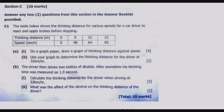Let us look at question C1. The table below shows the thinking distance for various speeds for a car driver to react and apply brakes before stopping. We have thinking distance in meters, then speed in kilometers per hour. Thinking distance ranges from 0 all the way to 15, and speed ranges from 0 to 80. Question (a), part (i): on a graph paper, draw a graph of thinking distance against speed.